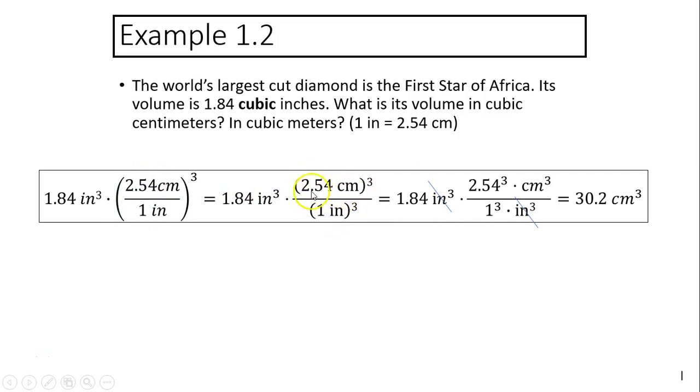Now this whole thing is 2.54 cubed times centimeter cubed. On the bottom is just 1 cubed times inch cubed. This 1 cubed is still 1, so inch cubed. The inch cubed can cancel. And the answer is 1.84 times 2.54 cubed centimeter cubed. So your answer should be 30.2 centimeter cubed.